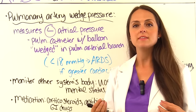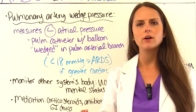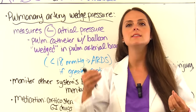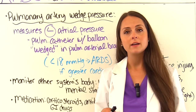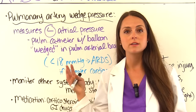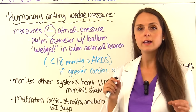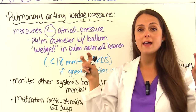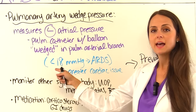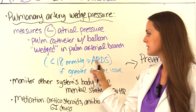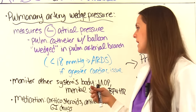A pulmonary artery wedge pressure reading may be obtained to differentiate ARDS from cardiac causes of pulmonary edema (such as heart failure). A pulmonary catheter with a balloon is inserted and wedged in a pulmonary arterial branch to measure left atrial pressure. A reading less than 18 mmHg indicates ARDS; a reading greater than 18 mmHg suggests a cardiac issue.